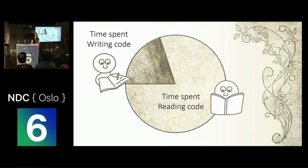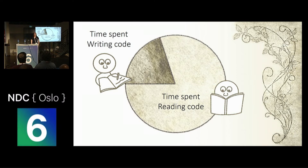Depending on the study that you read, a software engineer spends 70 to 80 or even as much as 90% of their time reading and understanding code versus writing it. Obviously, naming is a huge part of readability, but how much time do we actually spend training people to make readable code? I took a look at my introductory programming book from several years ago, and it spends less than half a percent of its time talking about how to name things.